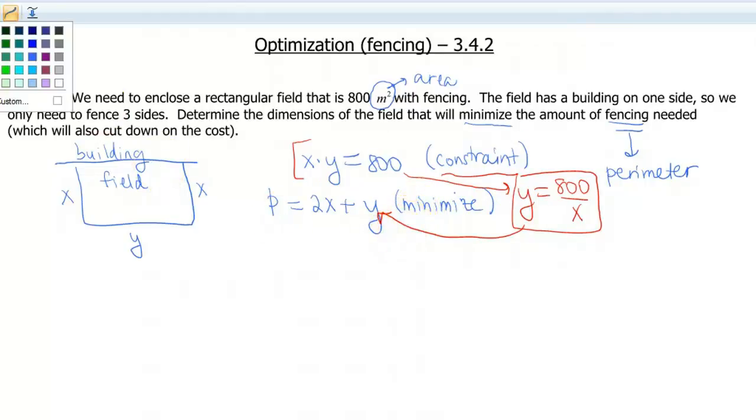So I now have a perimeter equation that's gonna look like 2x plus 800 over x. And this is the equation that I can now take the derivative of. It's got one variable to it, so I don't have to do anything funny.